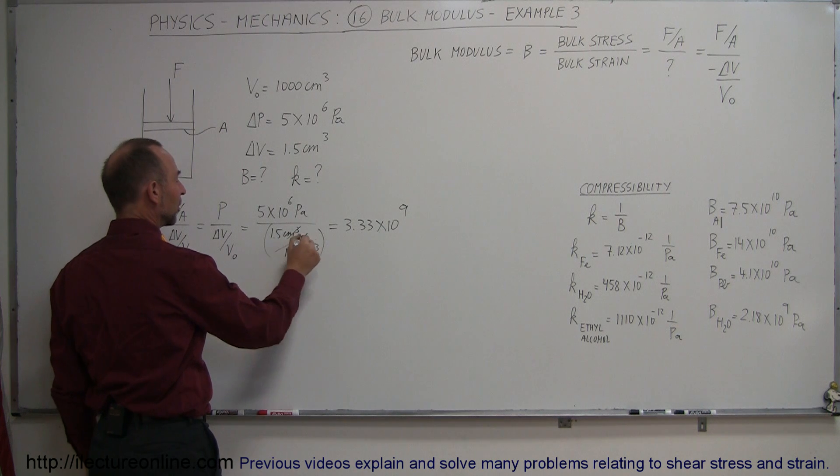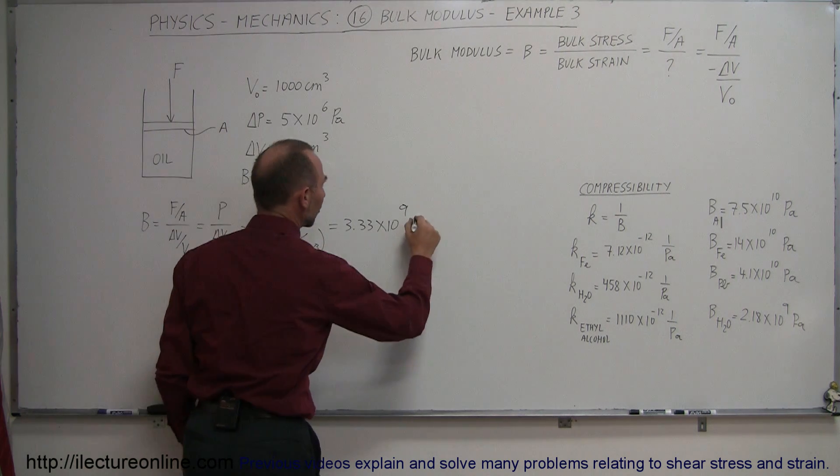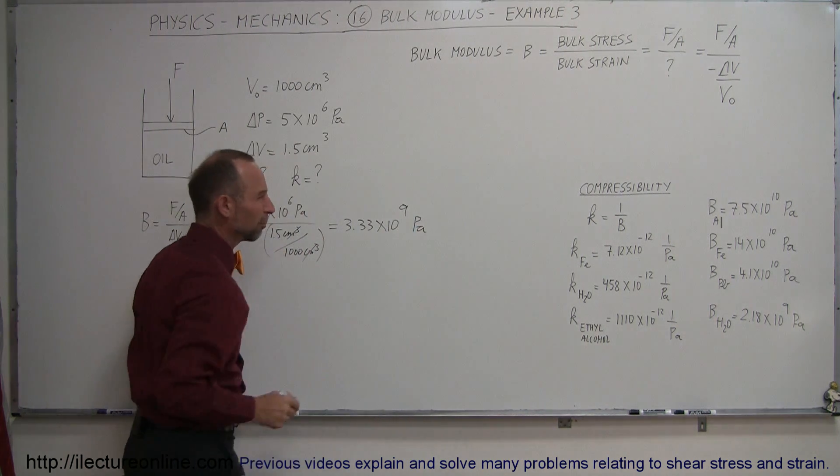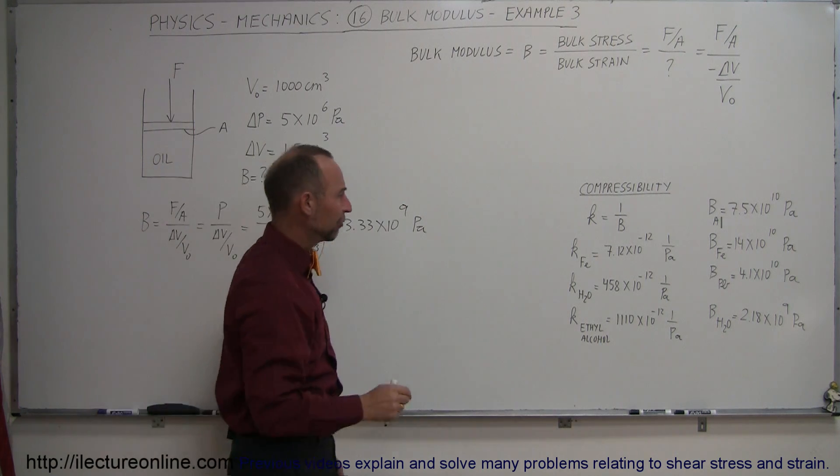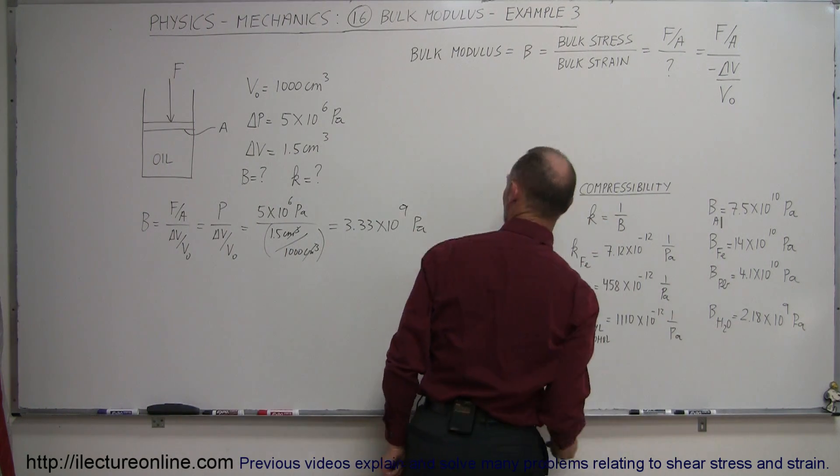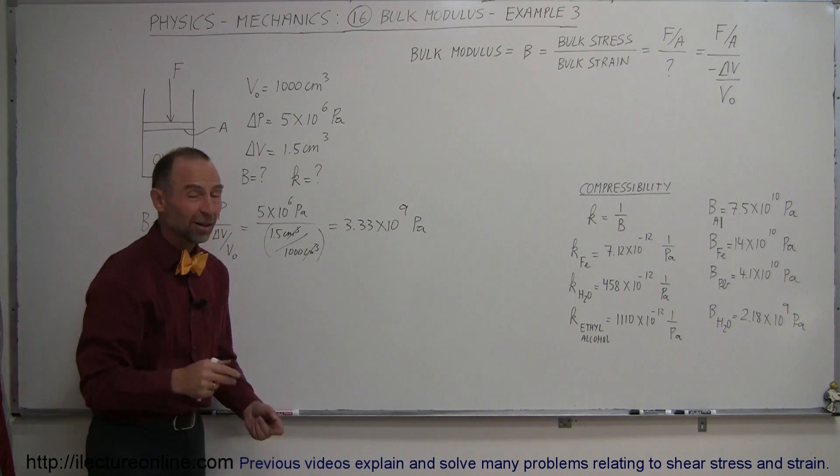This is unitless because cubic centimeters cancel out, so it leaves us with pascals. So how does it compare to what we have here? Well, for water, we have 2.18 times 10 to the 9, here we have 3.33 times 10 to the 9.